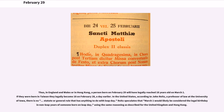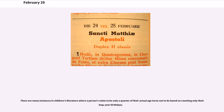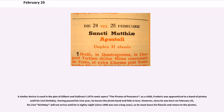There are many instances in children's literature where a person's claim to be only a quarter of their actual age turns out to be based on counting only their leap year birthdays. A similar device is used in the plot of Gilbert and Sullivan's 1879 comic opera The Pirates of Penzance: as a child, Frederick was apprenticed to a band of pirates until his 21st birthday. Having passed his 21st year he leaves the pirate band, but since he was born on February 29th, his 21st birthday will not arrive until he is 88, since 1900 was not a leap year, so he must return to the pirates.